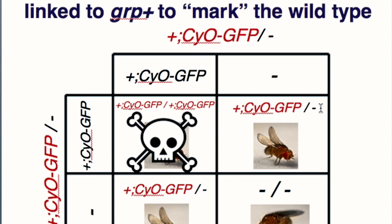To summarize: the balancer chromosome is chromosome 2, but it's engineered. On it you have a wild type copy of grapes, and that wild type copy of grapes is marked with curly wings and GFP. The mutant copy of grapes is on the normal chromosome 2 but doesn't have any phenotypic marker associated with it.